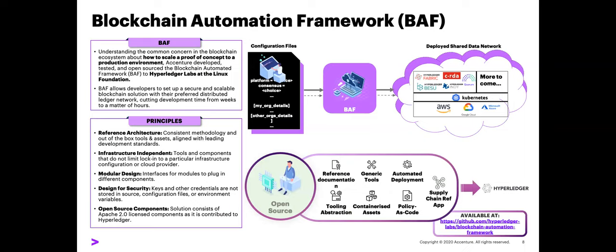That brings us to the Blockchain Automation Framework. What BAF started as within Accenture around 2018 was this idea of how do we take that high-level reference architecture and make it physical. If I have to define BAF in a sentence: the Blockchain Automation Framework is an automation framework which rapidly, consistently, and securely deploys production-ready DLT networks.